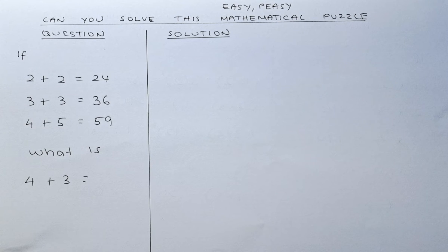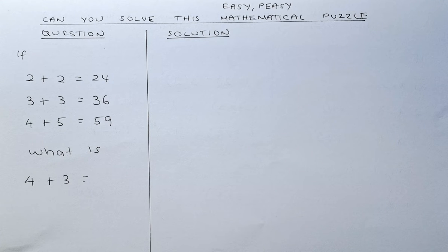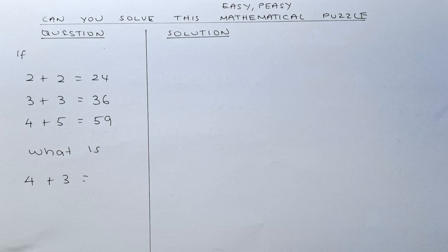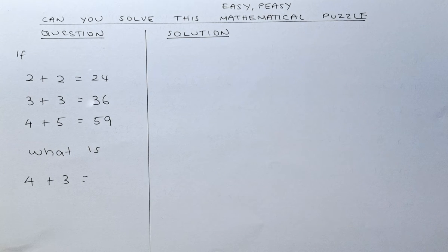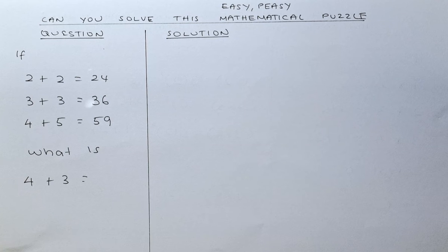If you are a beginner and you want to try this puzzle, have a go. So the question is, if 2 plus 2 equals 24, 3 plus 3 equals 36, and 4 plus 5 equals 59, what will be the answer for 4 plus 3?